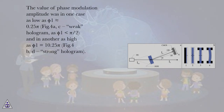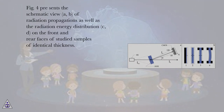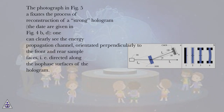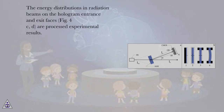The value of phase modulation amplitude was in one case φ₁ = 0.25π (fig. 4a, c — weak hologram, since φ₁ < π/2), and in another φ₁ = 10.25π (fig. 4b, d — strong hologram). Figure 4 presents the schematic view of radiation propagation as well as the radiation energy distribution on the front and rear faces of the samples of identical thickness. The photograph in figure 5 documents the reconstruction of a strong hologram; the data correspond to figure 4b, d, where one can clearly see the energy propagation channel orientated perpendicularly to the front and rear sample faces, i.e., directed along the isophase surfaces of the hologram. The energy distributions in radiation beams on the hologram entrance and exit faces shown in figure 4c, d are processed experimental results.